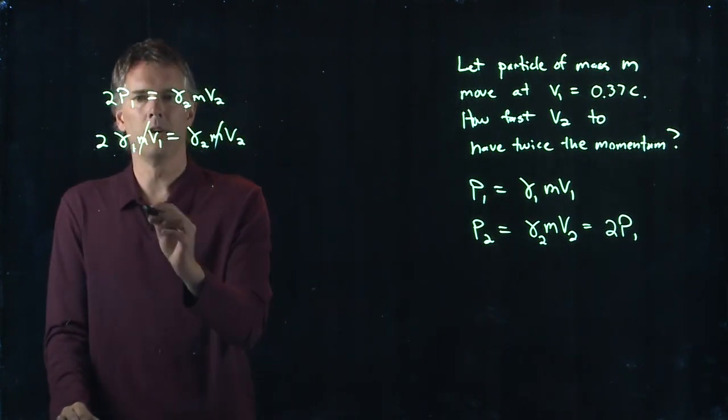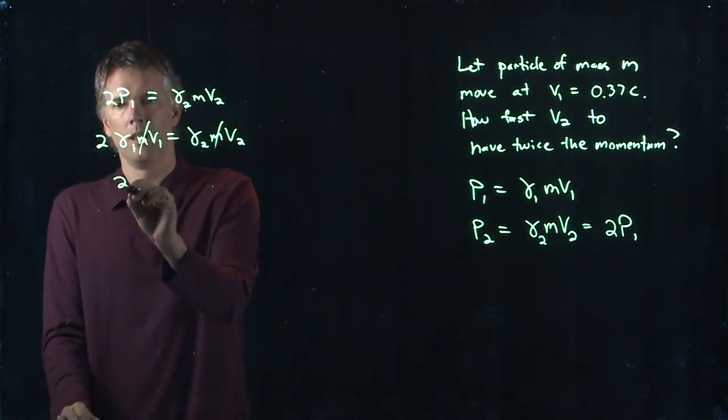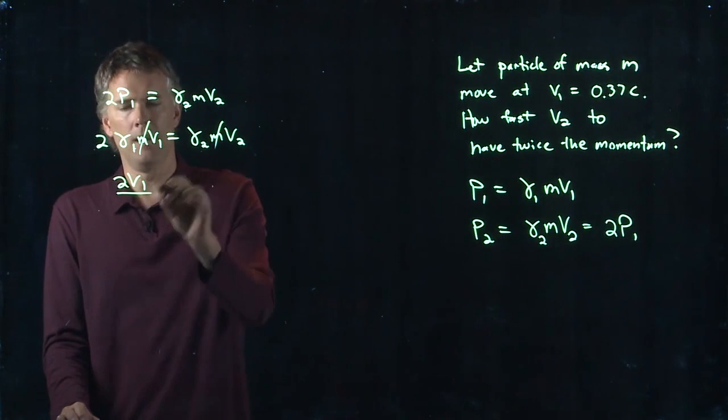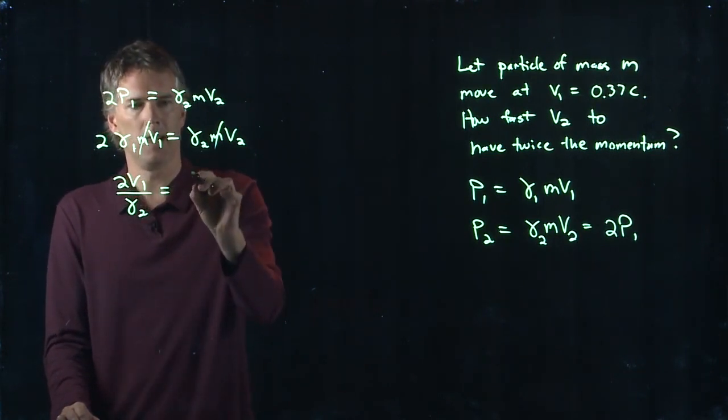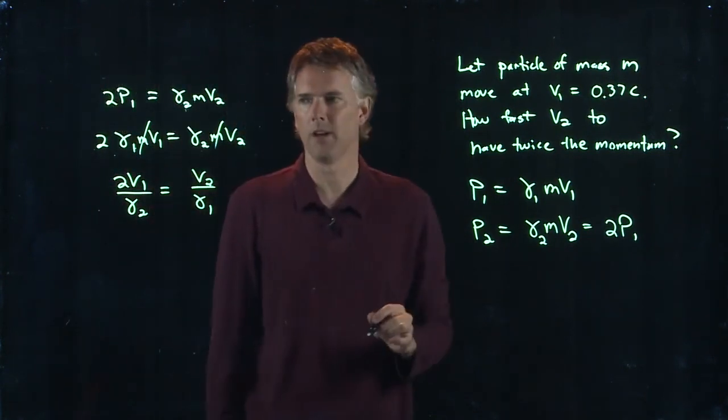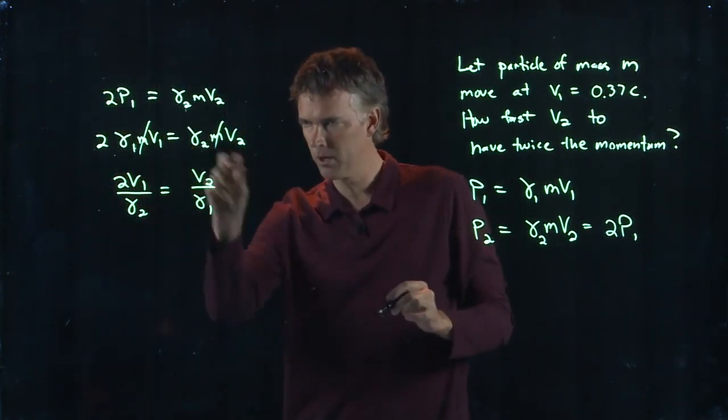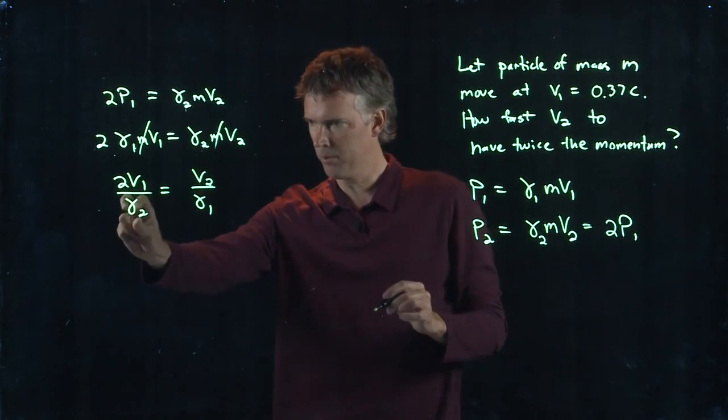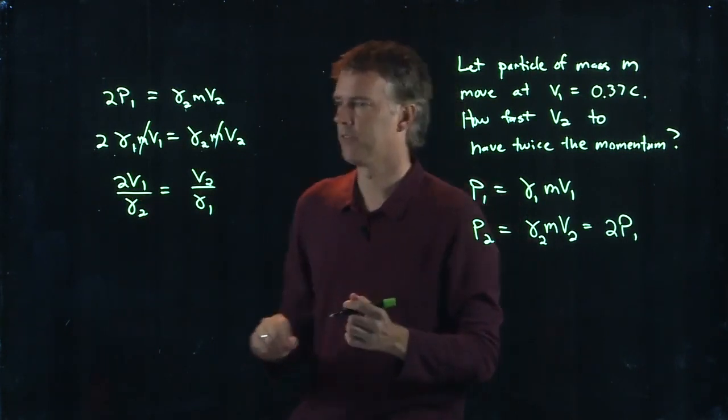And now let's do a little trick. Let's divide by gamma 2 and let's divide by gamma 1 on the right side. So I took gamma 1 and put it under there. I took gamma 2 and put it under there. And now let's square both sides.